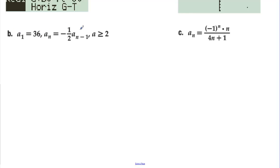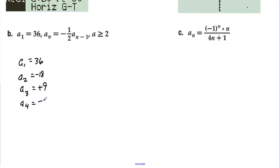Letter B is a recursive formula, so we'll do it by hand. A sub 1 is 36. A sub 2 equals 36 times negative one-half, which is negative 18. A sub 3 is positive 9. A sub 4 is negative 9 halves. A sub 5 is positive 9 fourths. The fraction keeps getting smaller and smaller, so this sequence converges to 0.